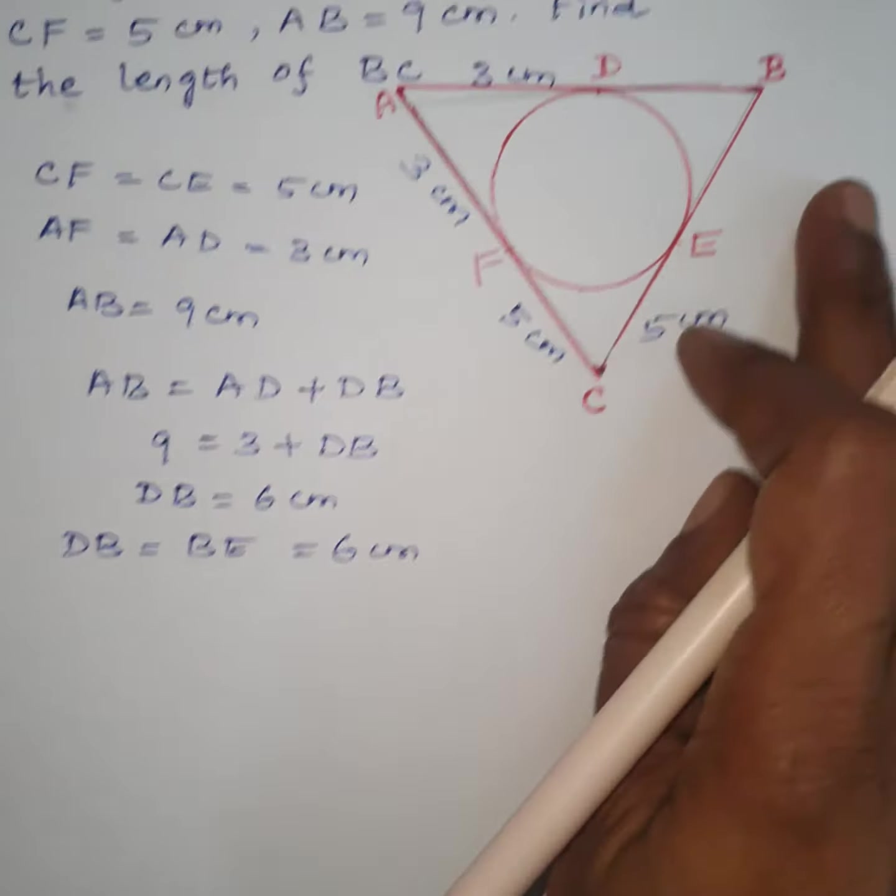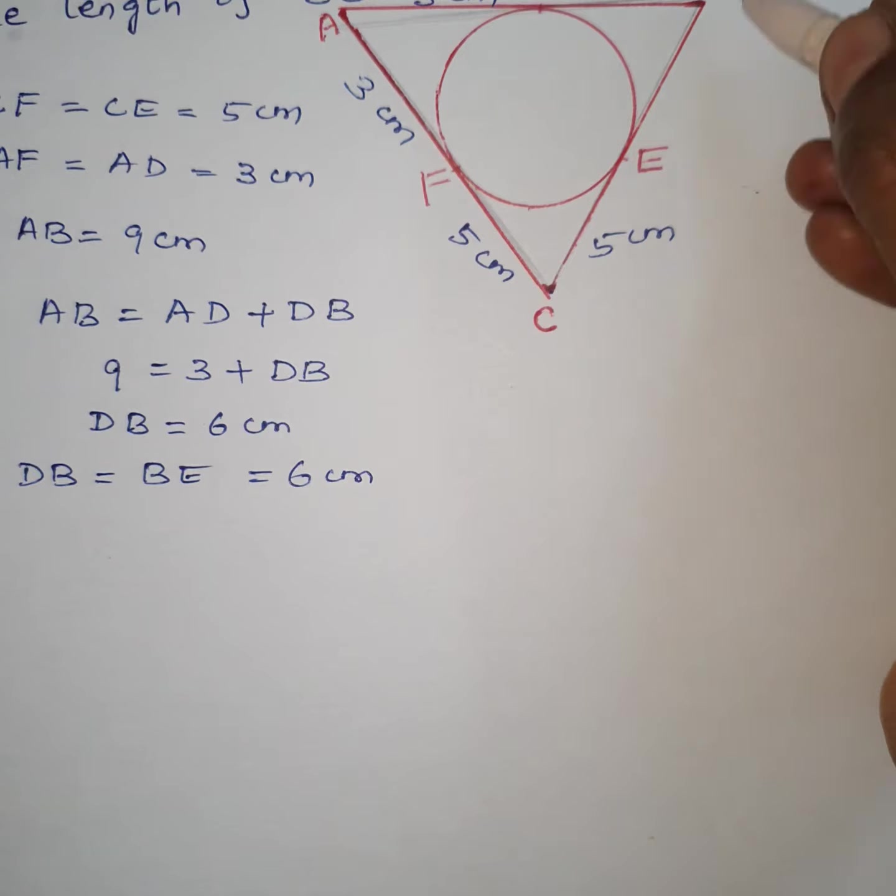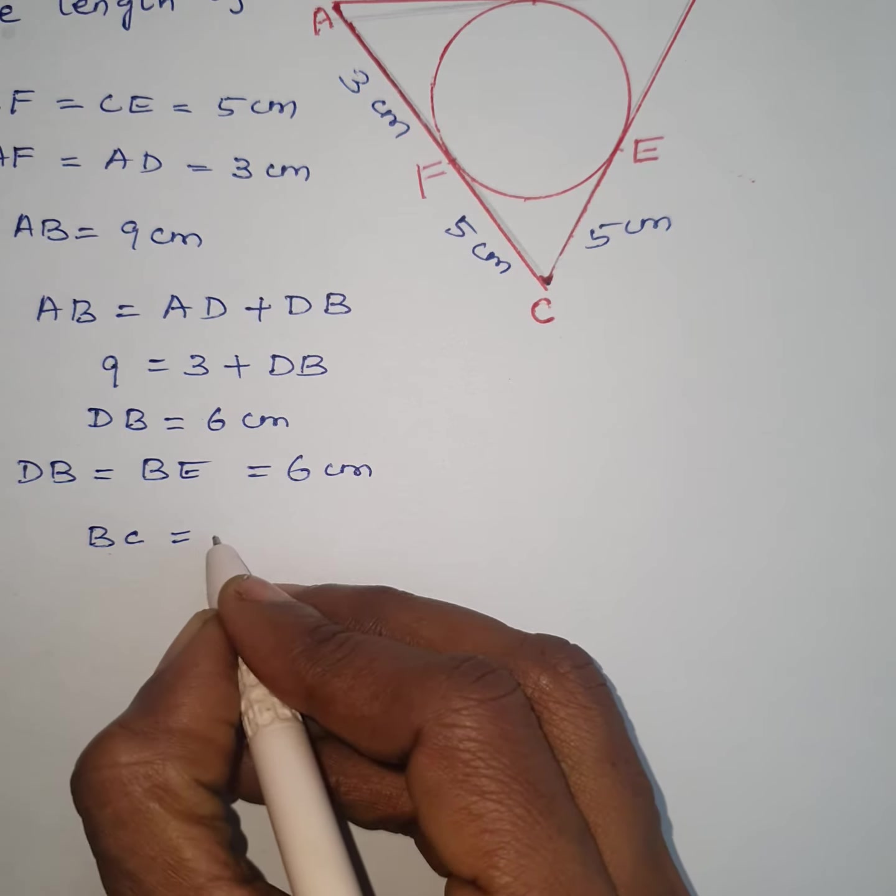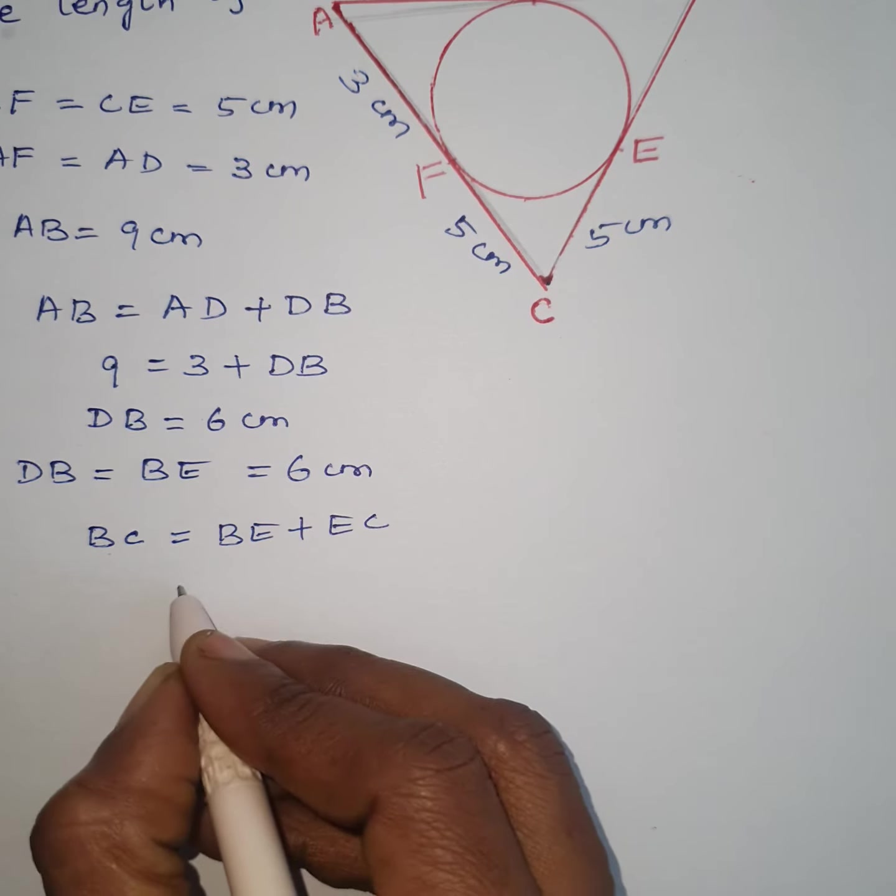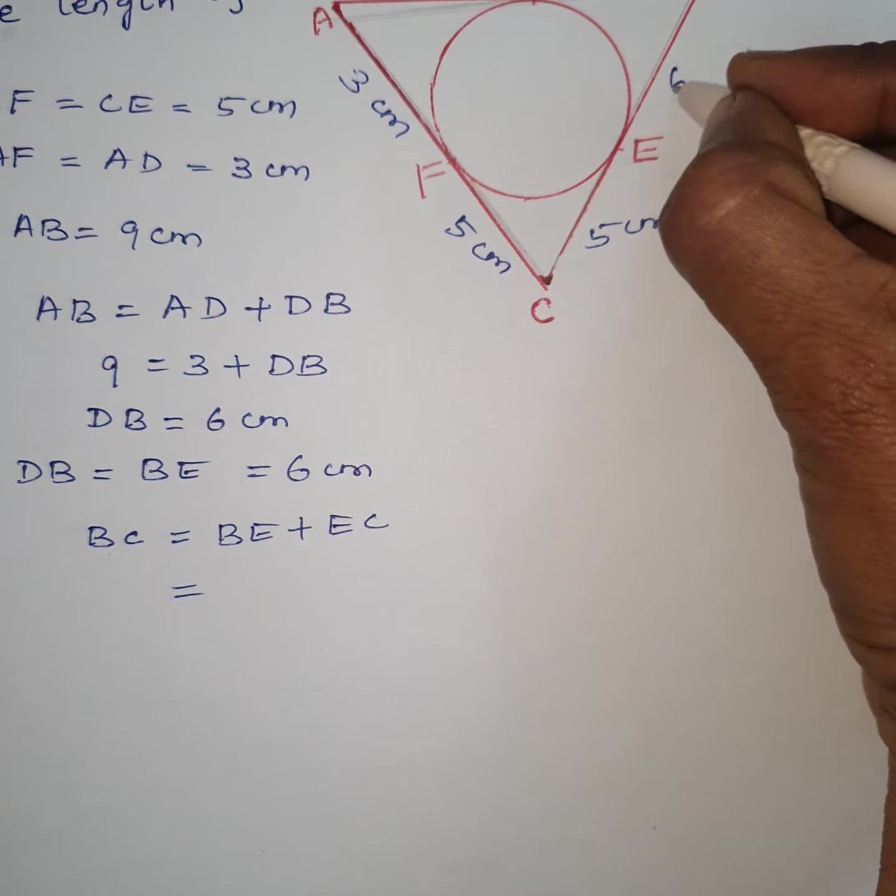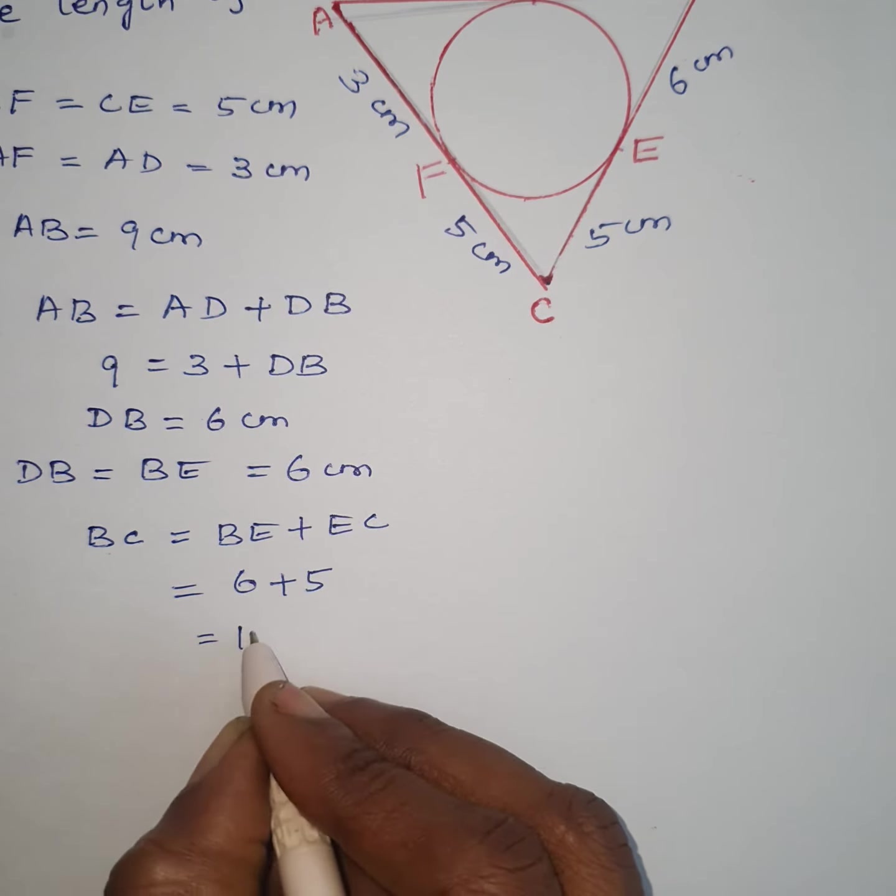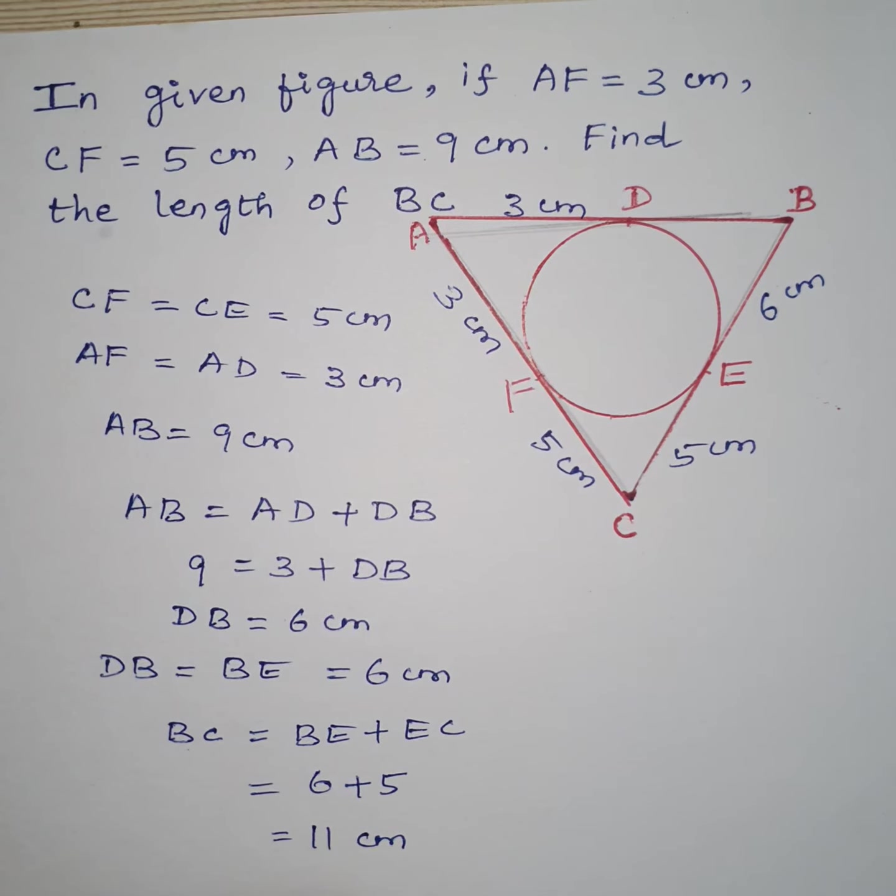We have to find the length of BC. The length of BC, we know CE is 5 and BE is 6 cm. Therefore, BC is BE plus EC, which is equal to BE is 6 cm, so 6 plus 5 which is equal to 11 cm. Therefore, the length of BC is 11 cm.